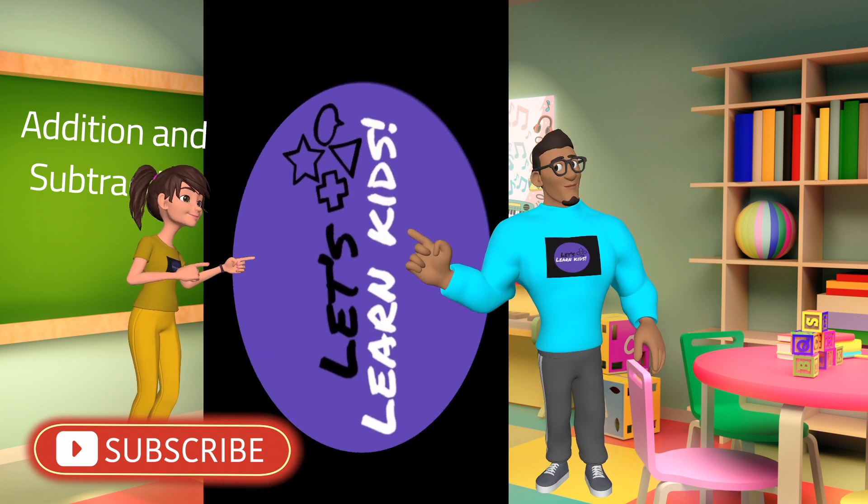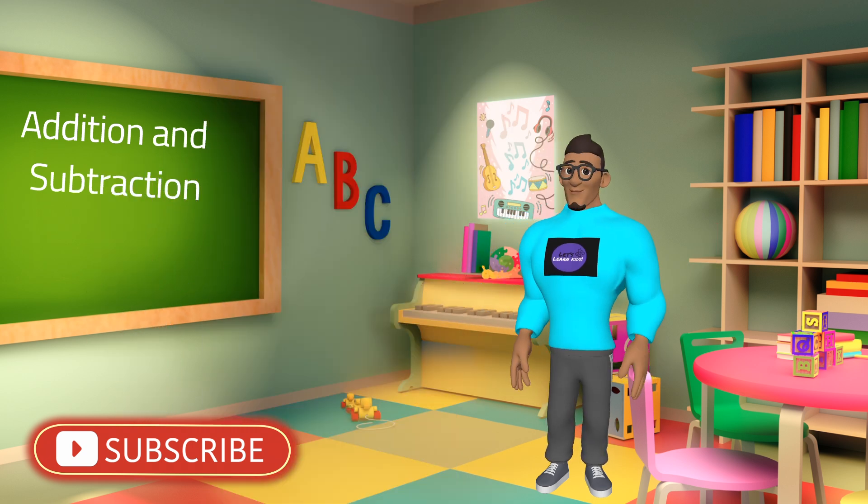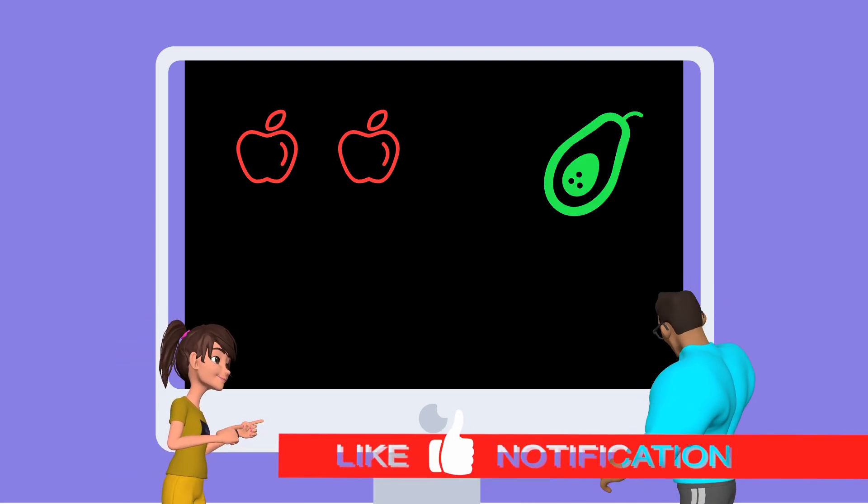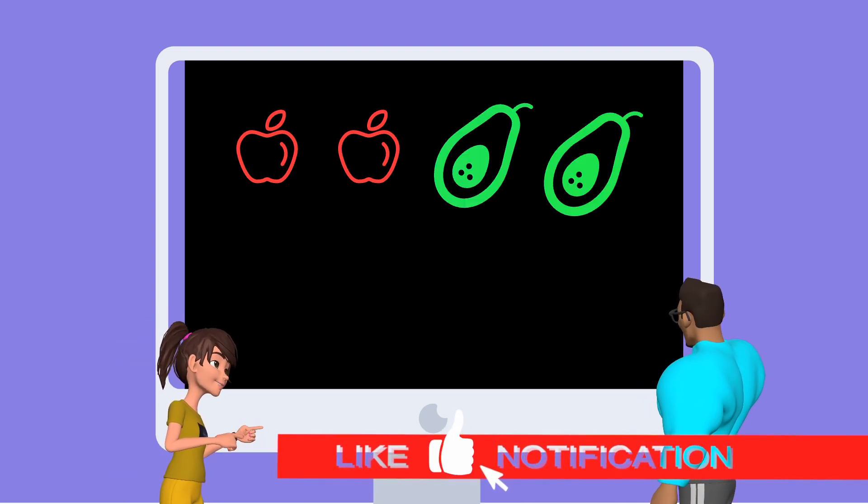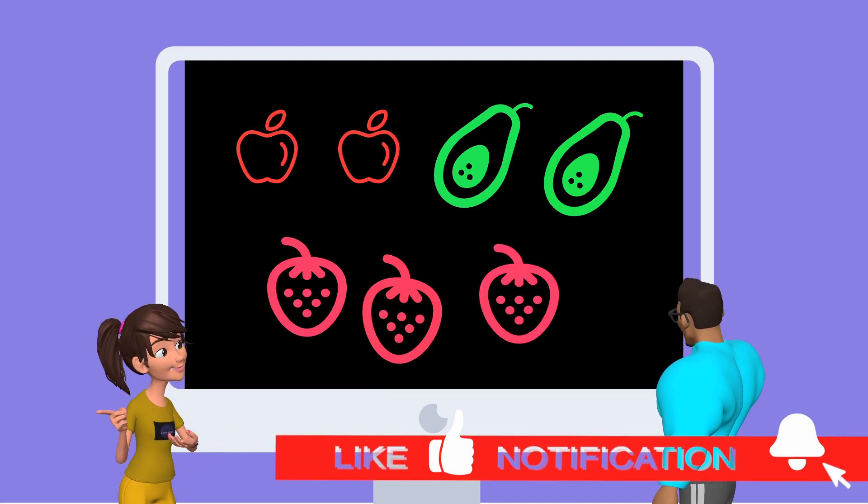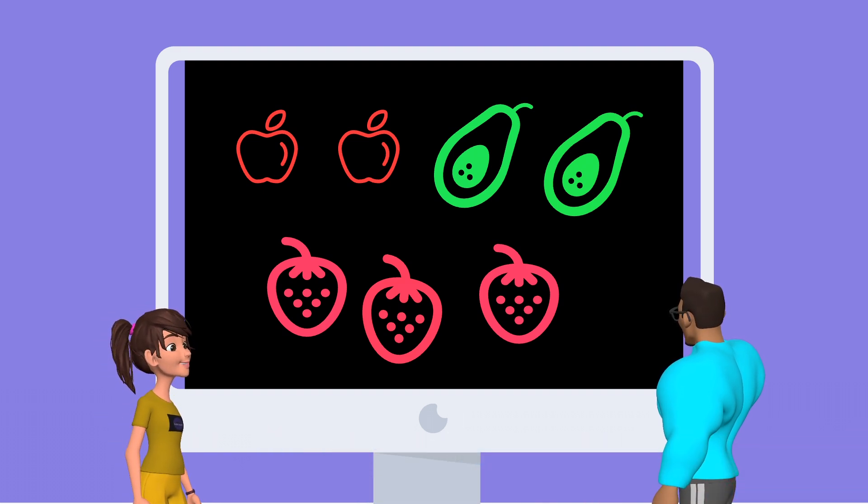Let's get started. Let's say I have two apples, two avocados, three strawberries. So that would be two plus two plus three equals... but before we answer that, let's count all the fruits.